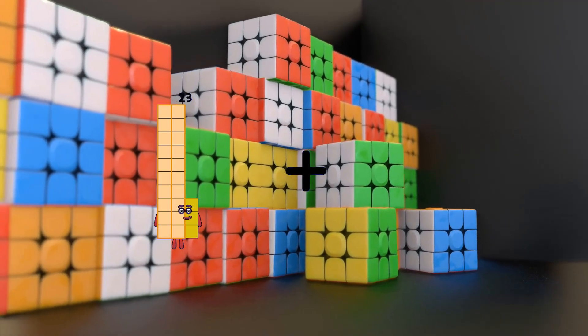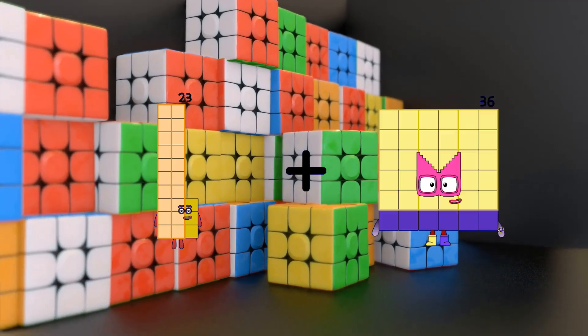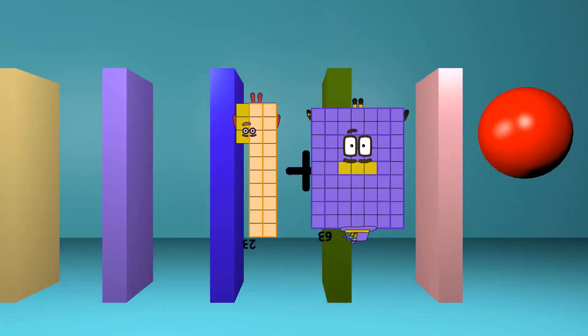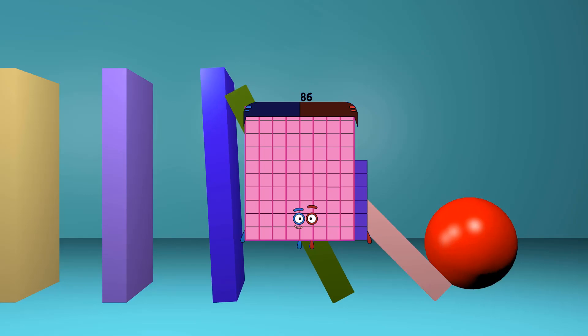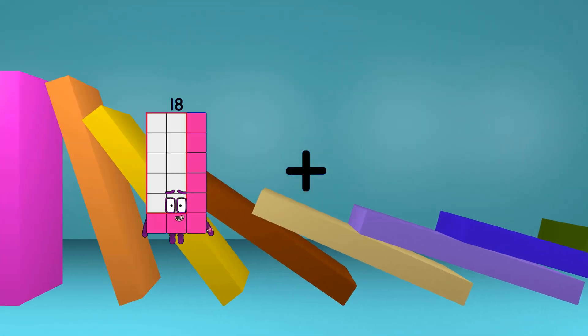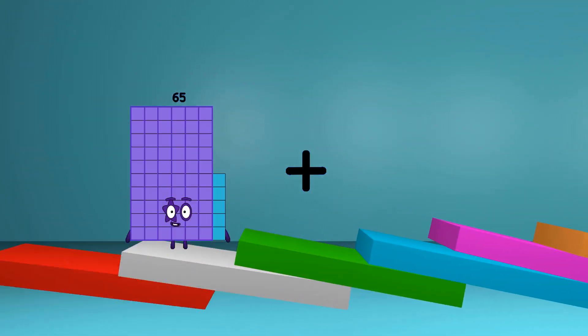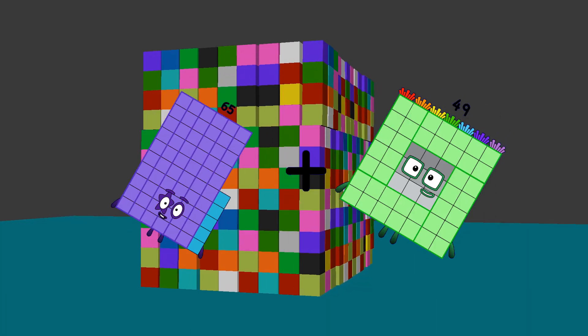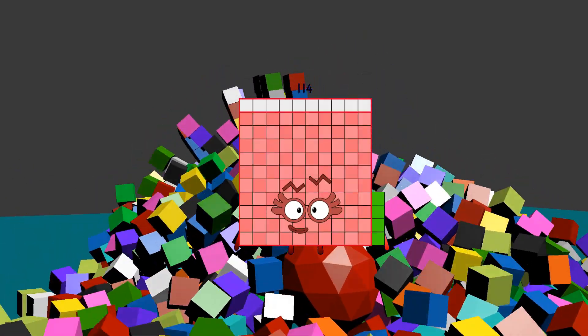23 plus 63 equals 86, 65 plus 49 equals 114